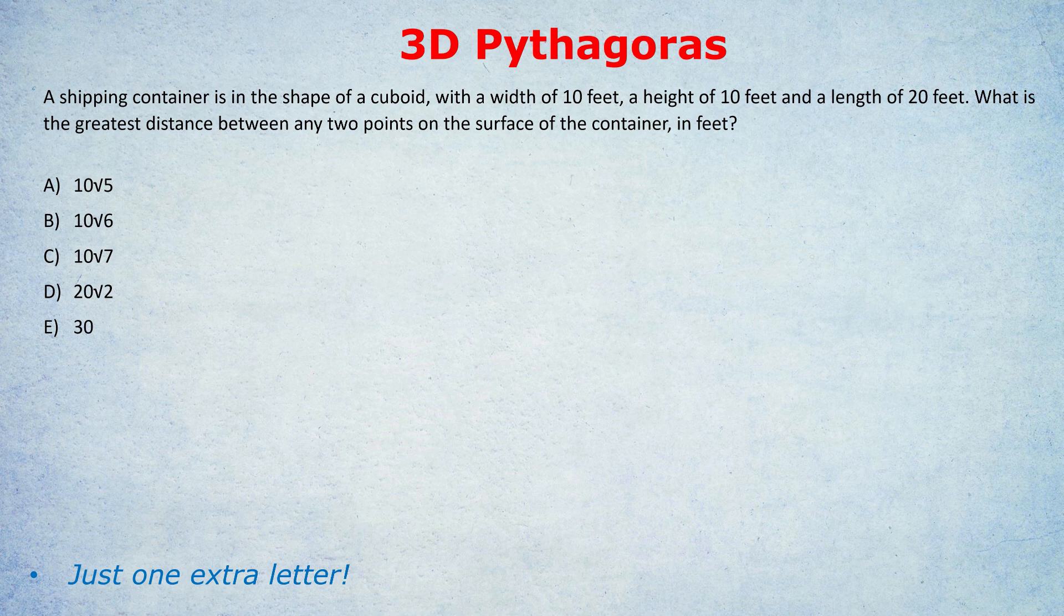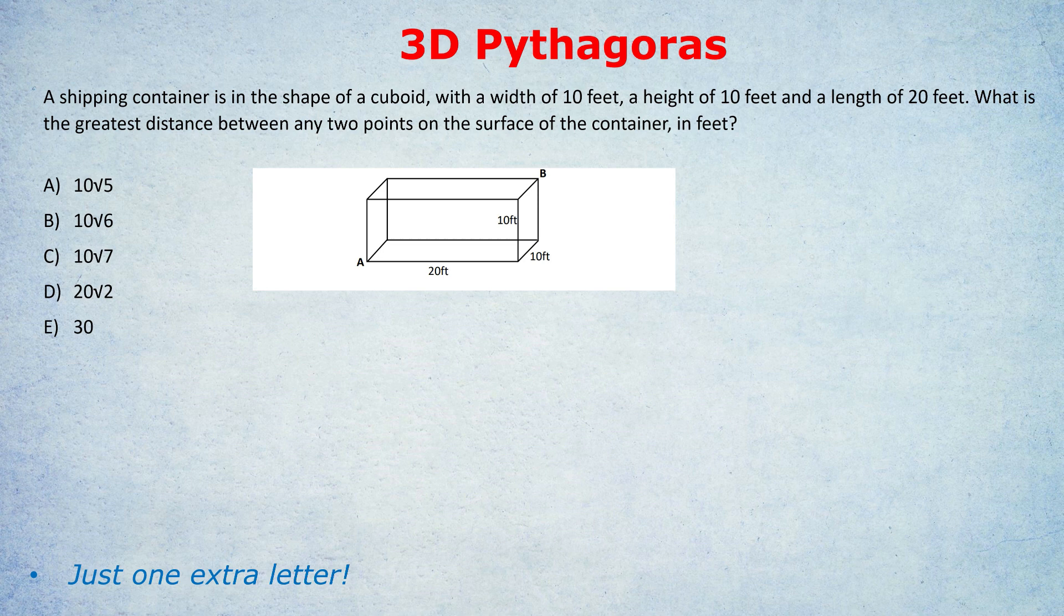Before I show you the trick, let's cover the type of question that can come up. It says a shipping container is in the shape of a cuboid with a width of 10, a height of 10, and a length of 20. What is the greatest distance between any two points on the surface of the container in feet? Now we don't need a diagram for this question, but I'll do a diagram just so you can see what's going on a bit more easily. Once you know the trick, you won't actually need a diagram.